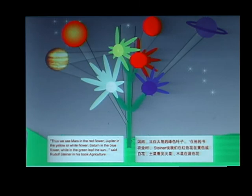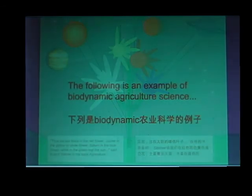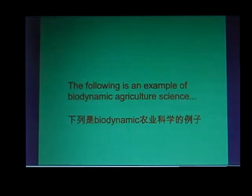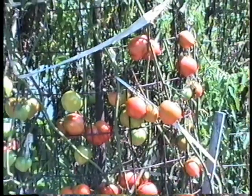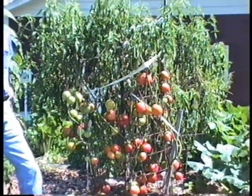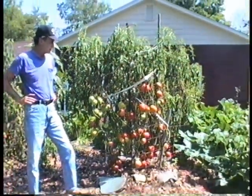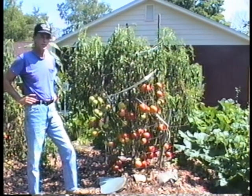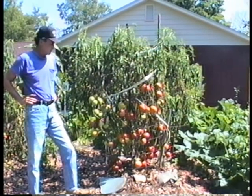If you continue watching, you'll see how a biodynamic seed produces a superior plant. This is more than a video about the super plant. It's a video about how form takes place in all plants on the planet, but we're going to deal with tomatoes to explain the biodynamic concept of round and linear.